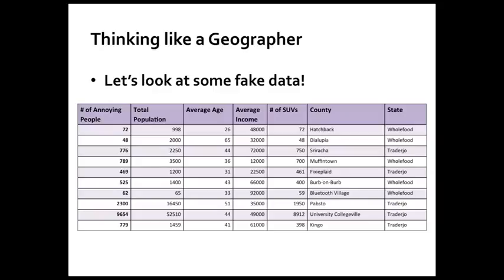So what could you do with this table right now? You could probably total up stuff. You could say, what's the total number of annoying people on this whole set of areas? You could calculate the average age for the entire set of places. You could do the same with income or the number of SUVs, all that kind of stuff. You could cross-tabulate some of that kind of thing. So what's the average income for people owning SUVs? You could probably start to tabulate some of that kind of stuff. But don't you really want to see where these things are in relation to each other?